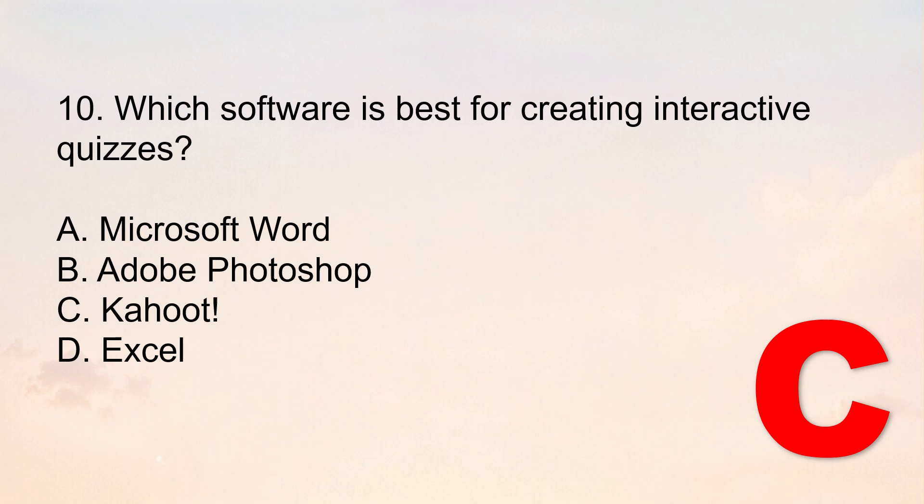The correct answer is Letter C, Kahoot. Kahoot allows teachers to build engaging, interactive quizzes for formative assessment. Microsoft Word is for documents, Photoshop is for design, and Excel is a spreadsheet tool — not ideal for quizzes. Only Letter C is the best answer.